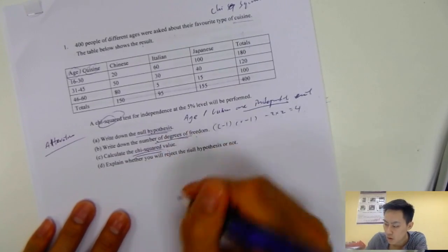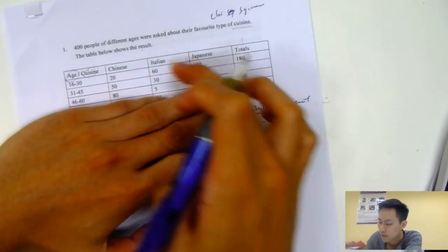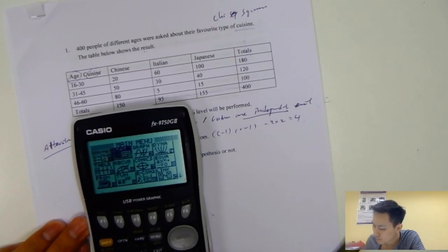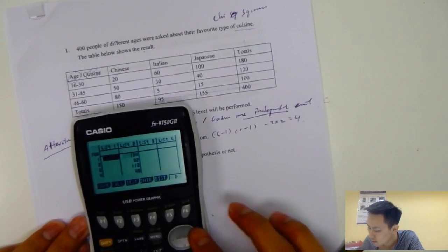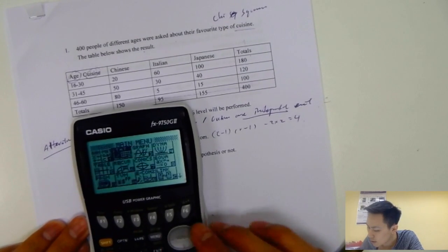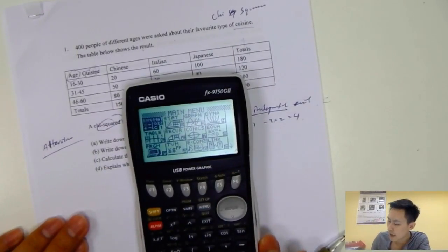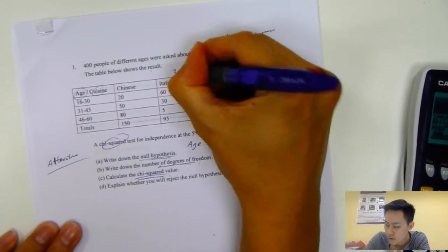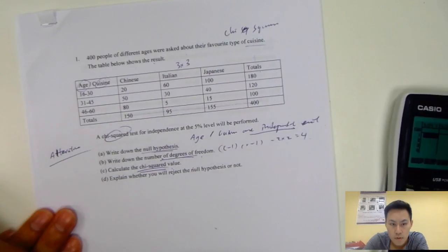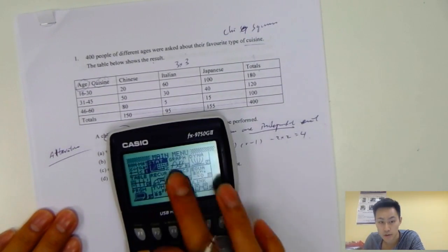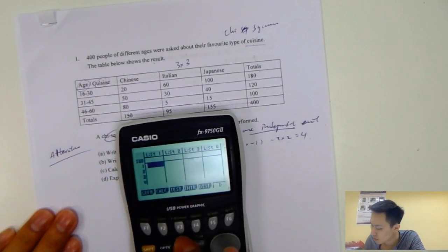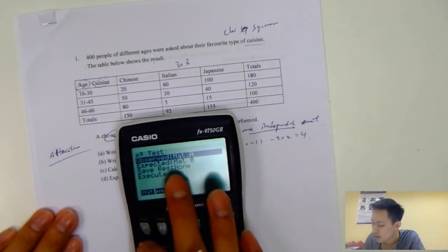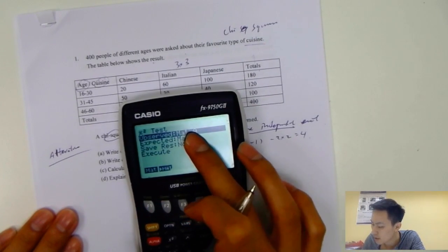Calculate the chi-squared value. Again, you ignore the total column and total row. Type all these numbers into your GDC. We need to go to matrix. For Texas model, you go to matrix and add the matrix. You type in this is a three by three matrix. But for Casio, I'll show you in the video. For Casio, you go to manual then statistics. You'll see test, so go to test then chi-squared test. You will see GOF and two-way, so we go two-way. Observe matrix A, then we go F2.